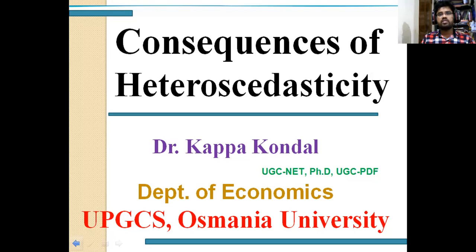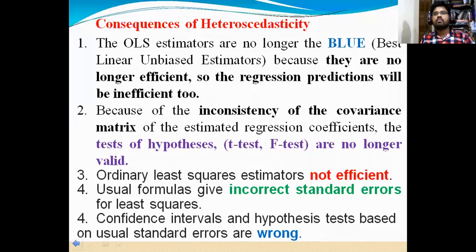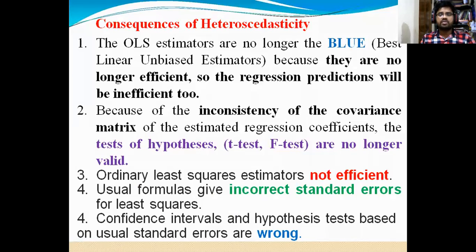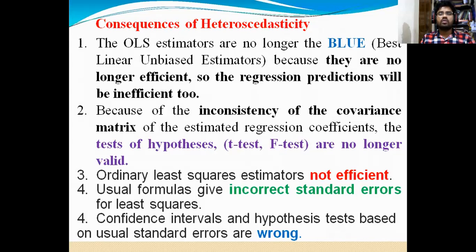For example, when heteroscedasticity happens, what will we look at? What are the consequences? When we are getting a heteroscedasticity problem, the main consequence is: when you run the OLS method, nothing but when you are estimating with the OLS method, the OLS estimators are no longer BLUE — no longer BLUE. What is BLUE? Best Linear Unbiased Estimator. So when you are applying the OLS method to regression analysis, the estimators are no longer BLUE — whatever values we estimate may not be accurate. That is, we will not satisfy the BLUE property.